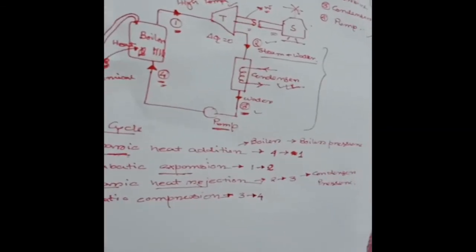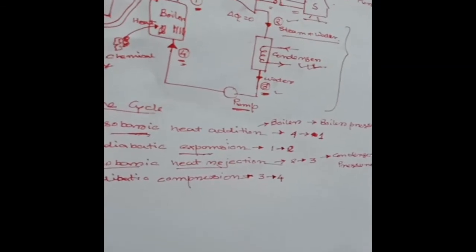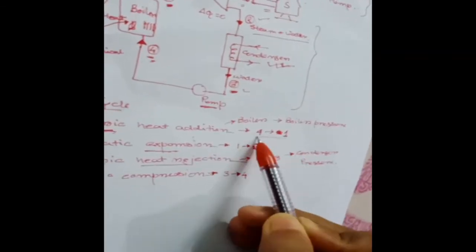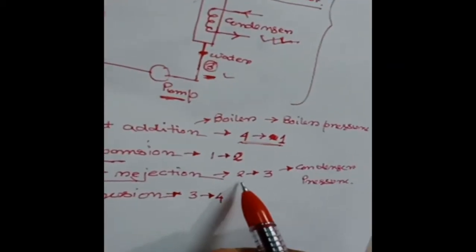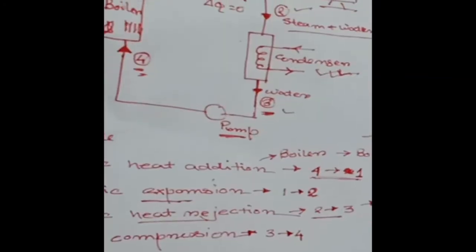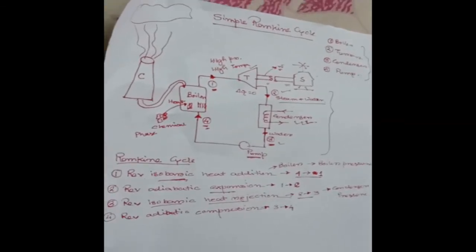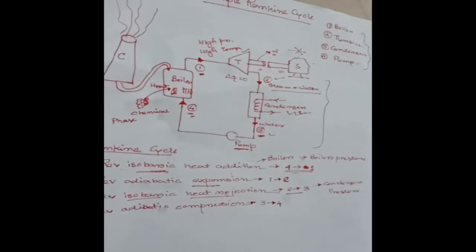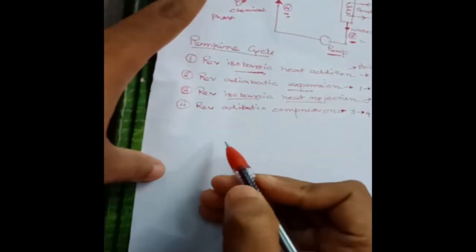From this diagram you can see that in the simple Rankine cycle, in steps four to one and two to three, the pressure remains constant. Basically, the simple Rankine cycle or basic power plant cycle runs on two pressures: one is boiler pressure and the other is condenser pressure. Now I will draw the PV diagram and the TS diagram so that it will help you in solving problems. Today I will explain both diagrams, and the next day I will solve one problem on the simple Rankine cycle.